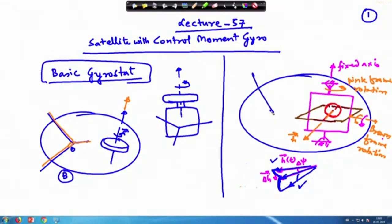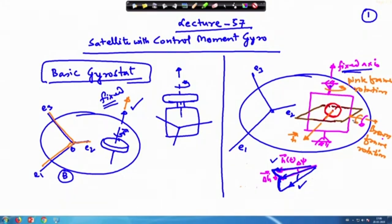This rotation is with respect to the body frame — let us say this is our e1, e2, and e3 direction. In the gyro state, this direction remains fixed. But here in the CMG, this axis is fixed while this axis is not fixed — it will also rotate. Neither this axis is fixed, neither the h vector remains fixed, because it changes due to both rotations. So this case becomes complicated as compared to the gyro state.